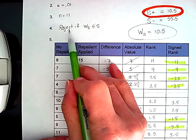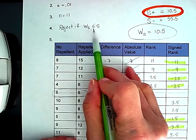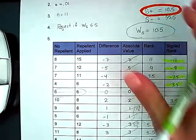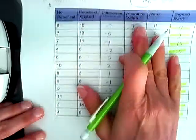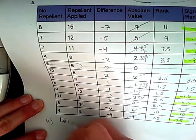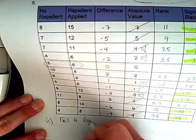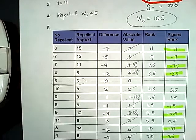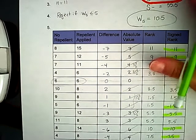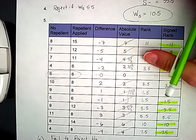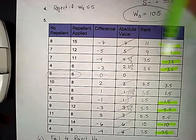So in step six, we're going to fail to reject our null hypothesis. Therefore, there is not enough evidence at the 1% level to conclude that there is a difference in the amount of water repelled.